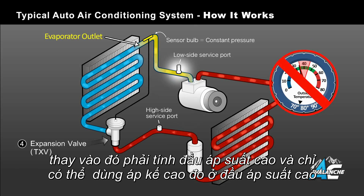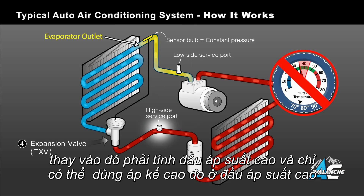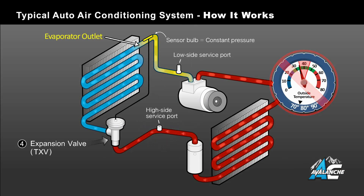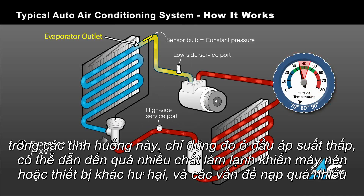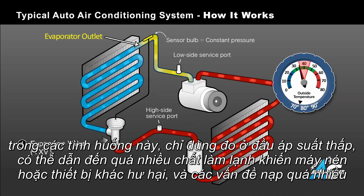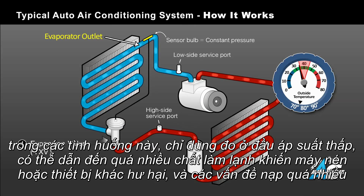The excess refrigerant will build up on the high side and can only be measured using a high side gauge. In these cases, using only a low side gauge can potentially cause too much refrigerant to be added and result in damage to the compressor or other problems associated with overcharging.